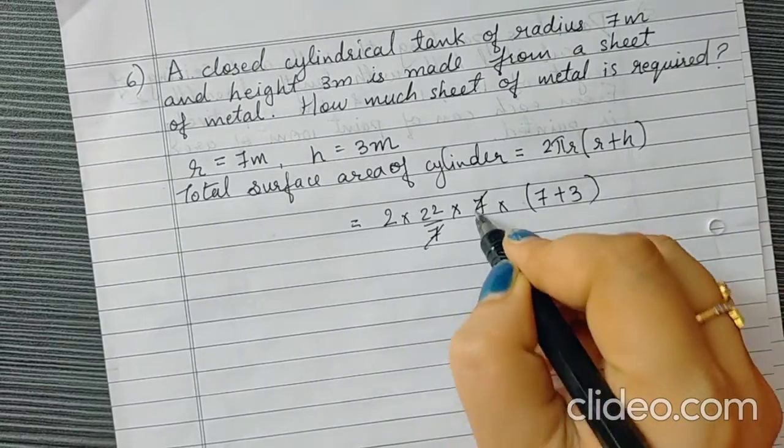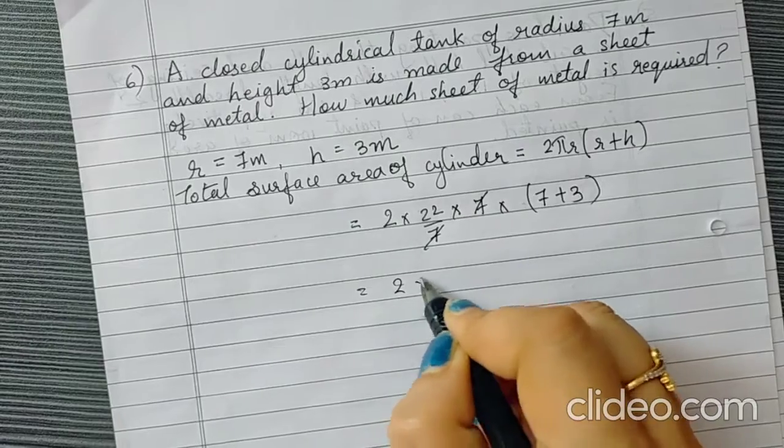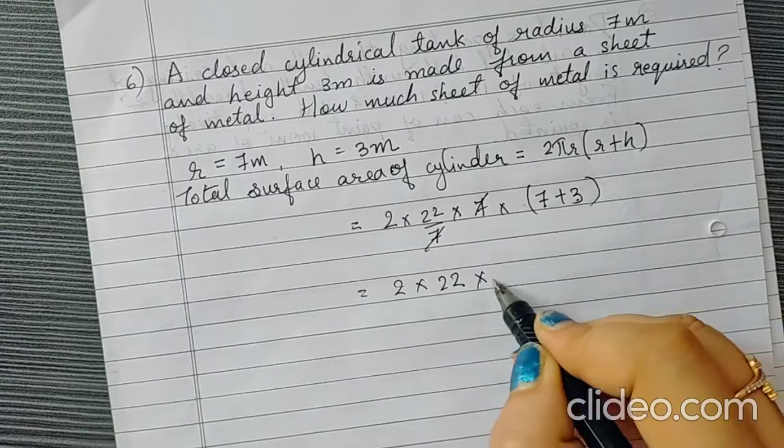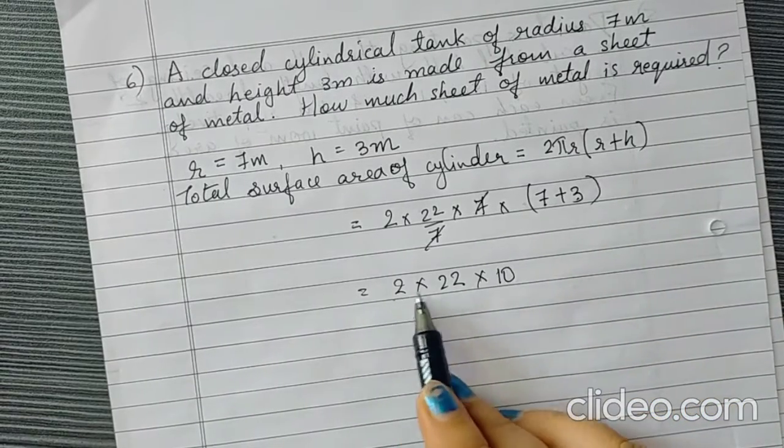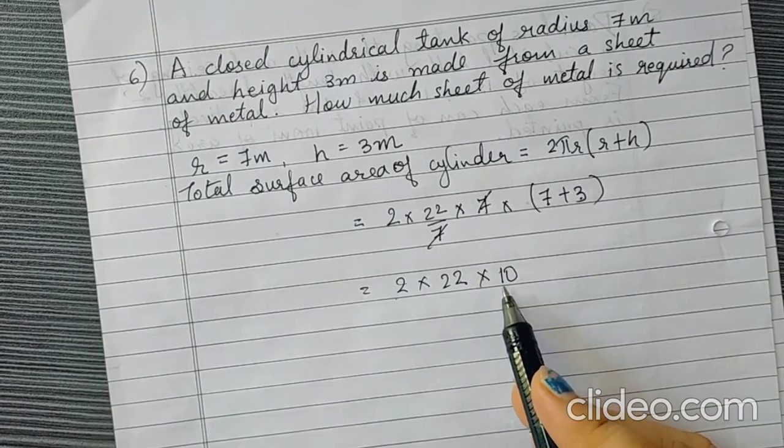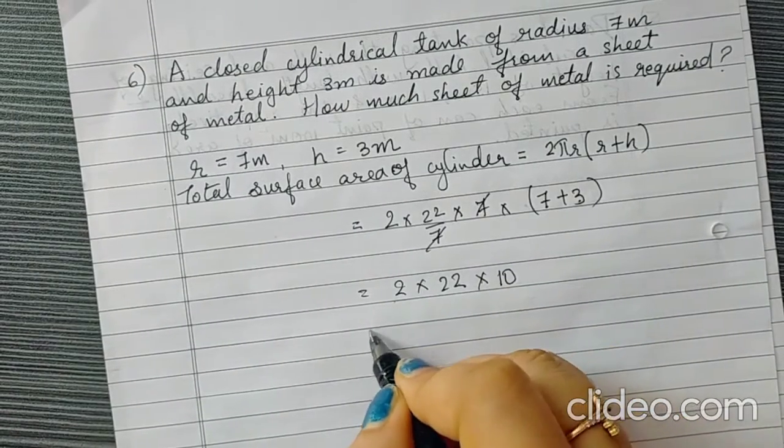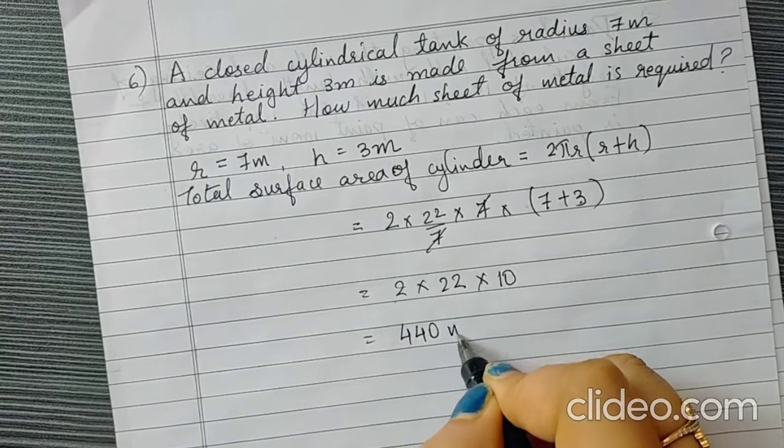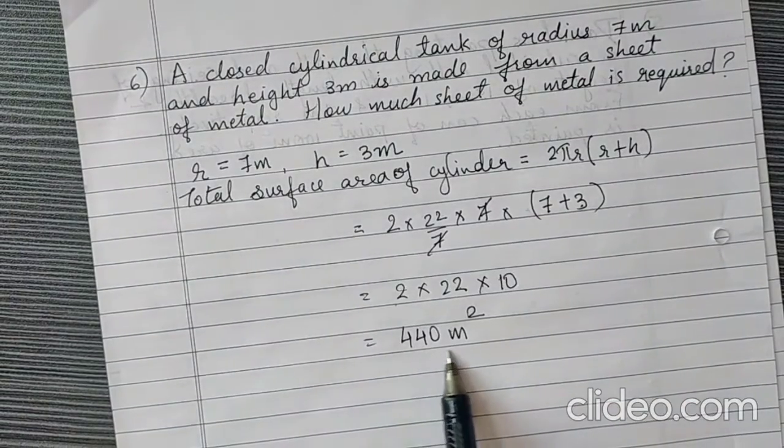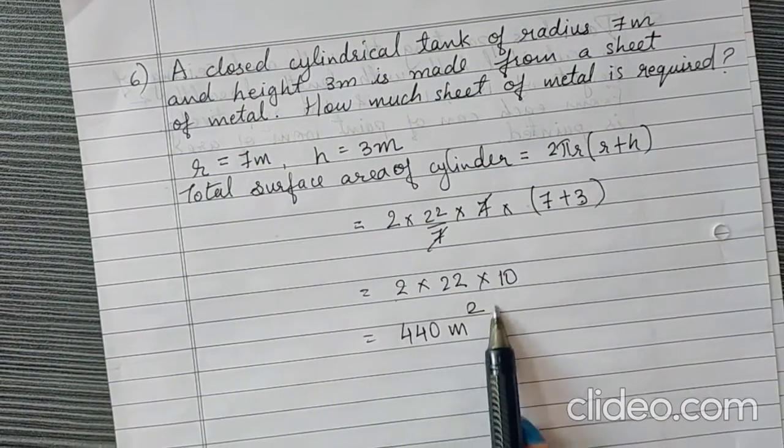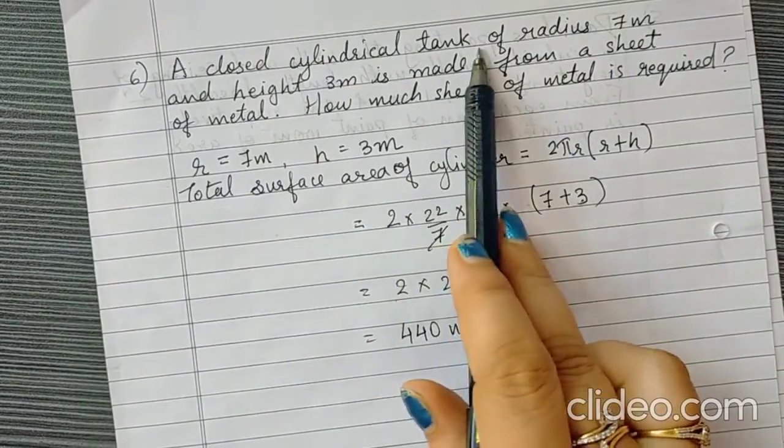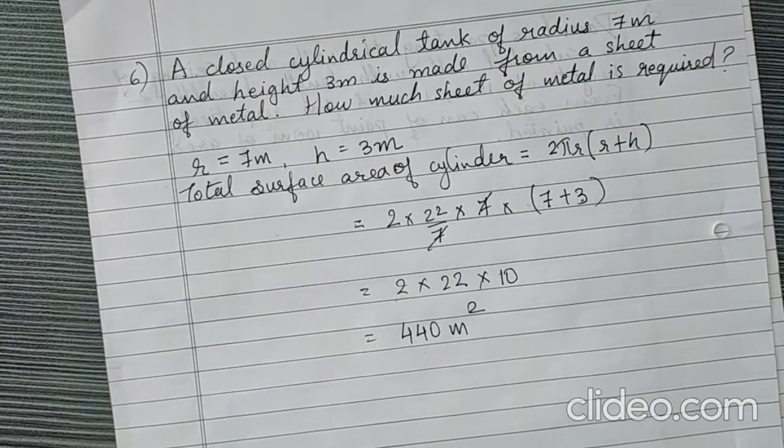We can cut this 7. So we get 2 into 22 into 7 plus 3 is 10. So 22 times 2 is 44. 44 into 10 it is 440. So that is 440 meter square. Because we found area, it will be meter square. So this much sheet is required to form a cylindrical tank.